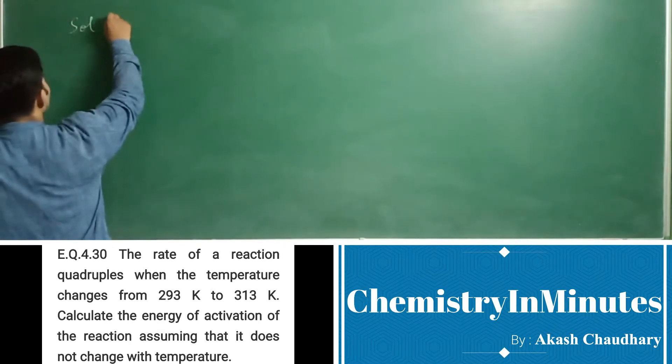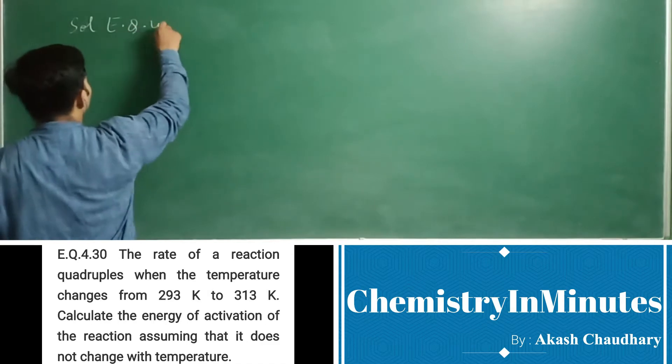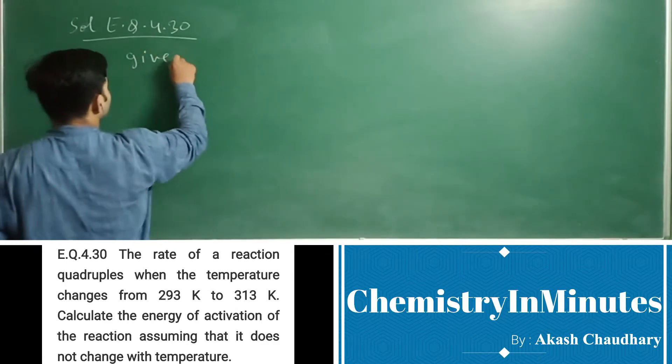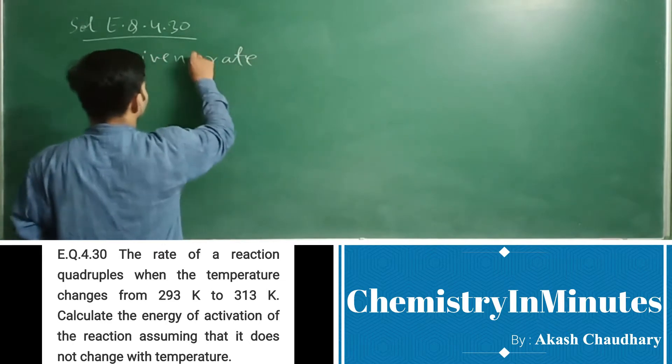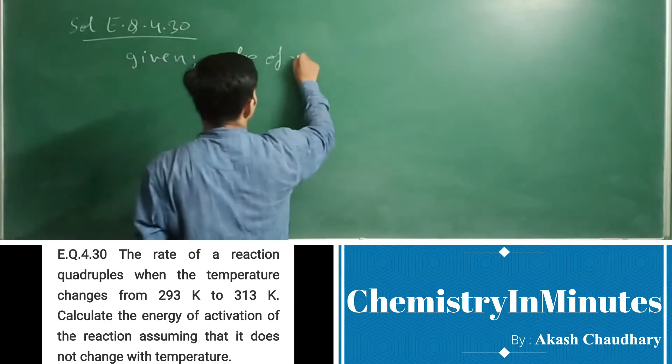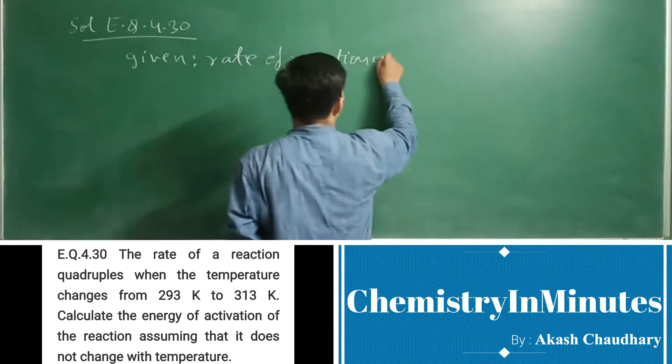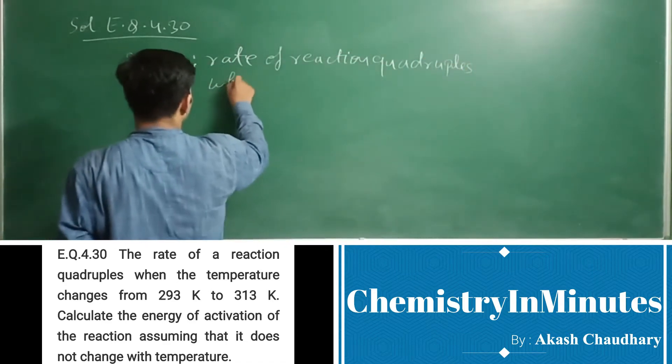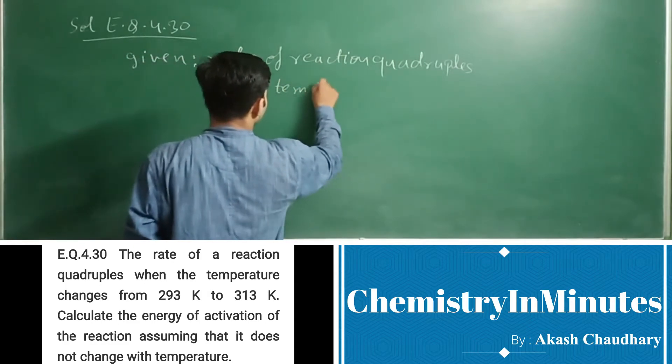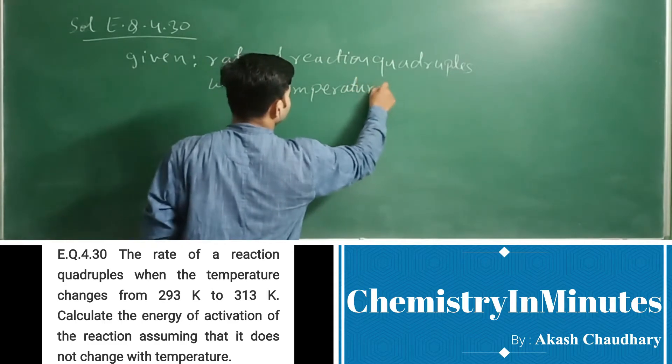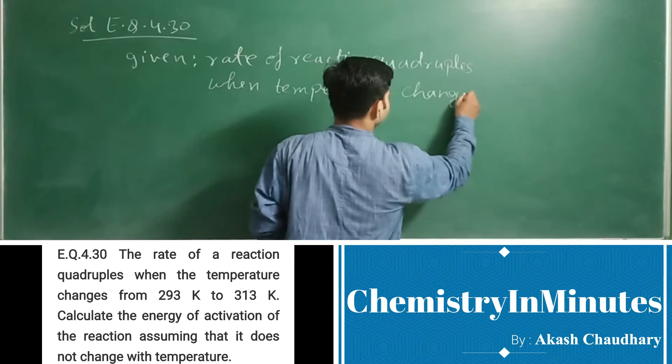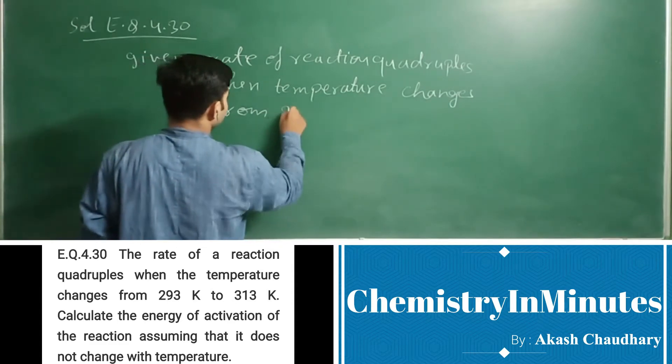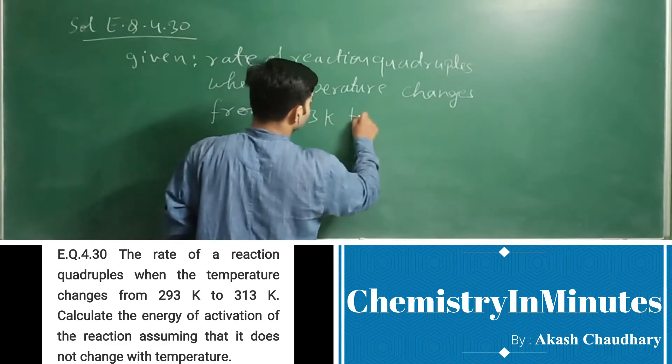Solution to exercise question 4.30. Given: the rate of reaction quadruples when temperature changes from 293K to 313K.